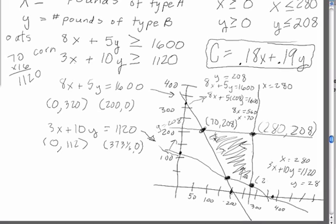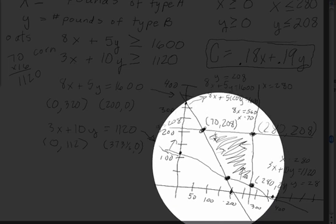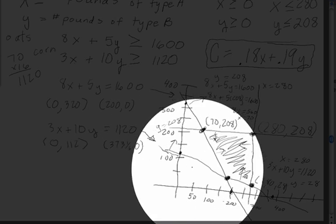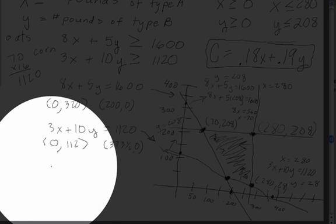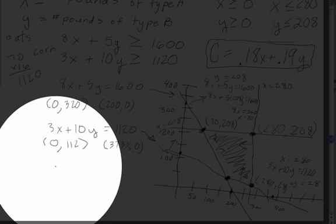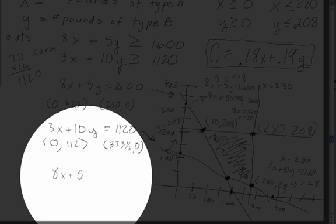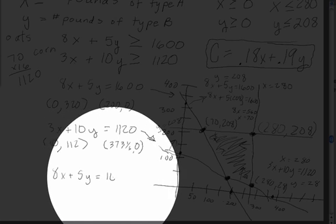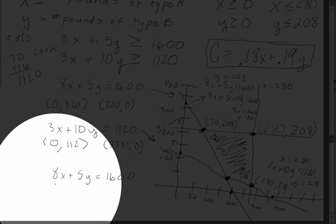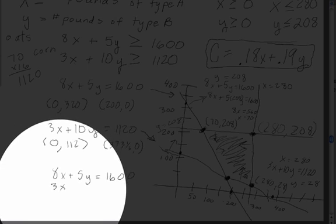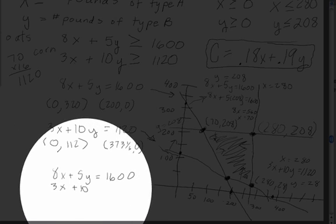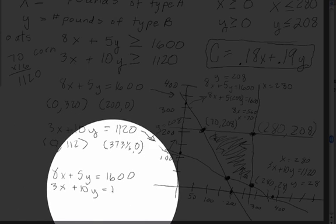So that is going to give you the coordinate 280 and 28. Now this one's going to take a little more time because it has to do with your two equations that have two variables in it. That's going to give you 8x plus 5y equals 1,600 and 3x plus 10y equals 1120.